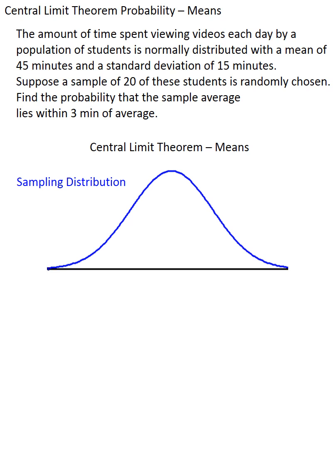The second thing the central limit theorem tells us is that the average of the sampling distribution will be equal to the population average. In this case, 45 minutes. And the third thing that the central limit theorem gives us is that we can compute the standard deviation of the sampling distribution, otherwise known as sigma x bar, by using this formula, along with the population standard deviation and the sample size of 20.